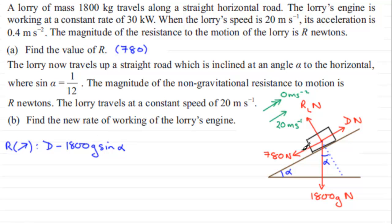So that's the component of the weight down the plane. Then we've got this resistive force here, minus 780. And this is our resultant force. And because there's no acceleration, it's moving at a constant speed, that's going to be zero.